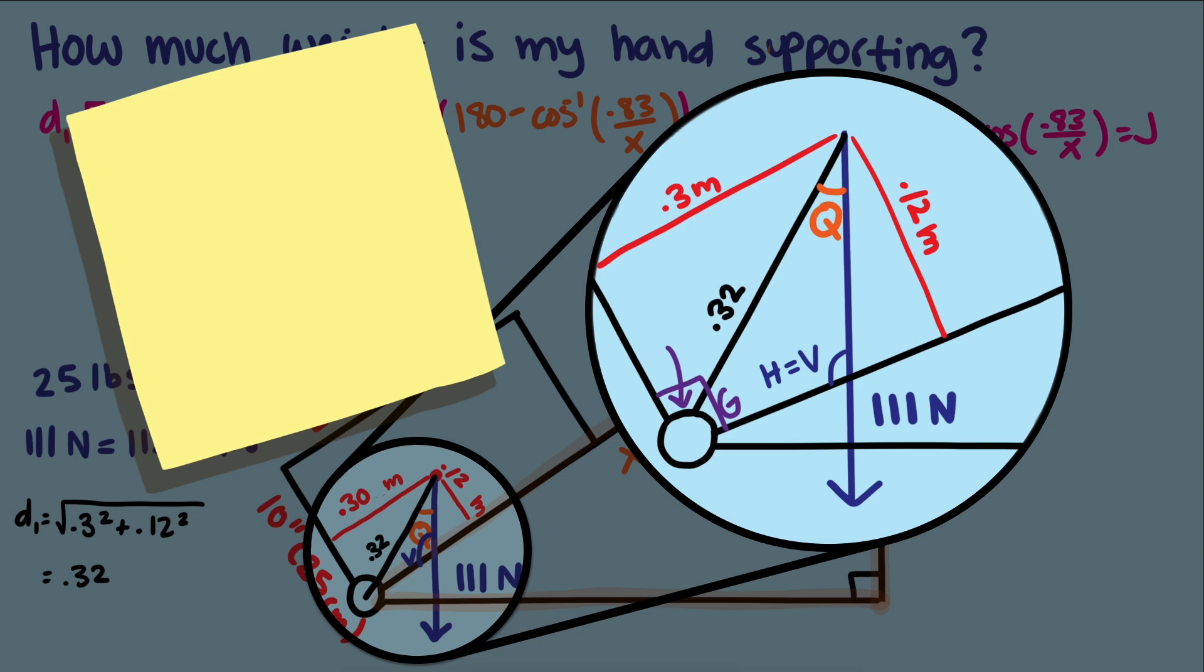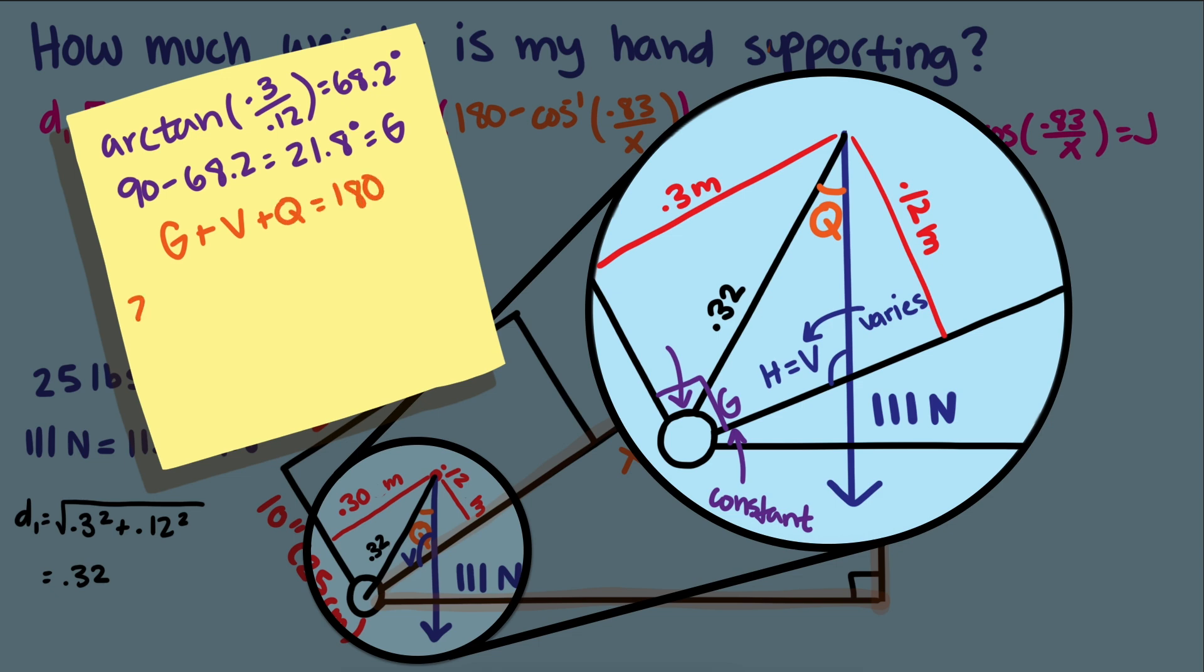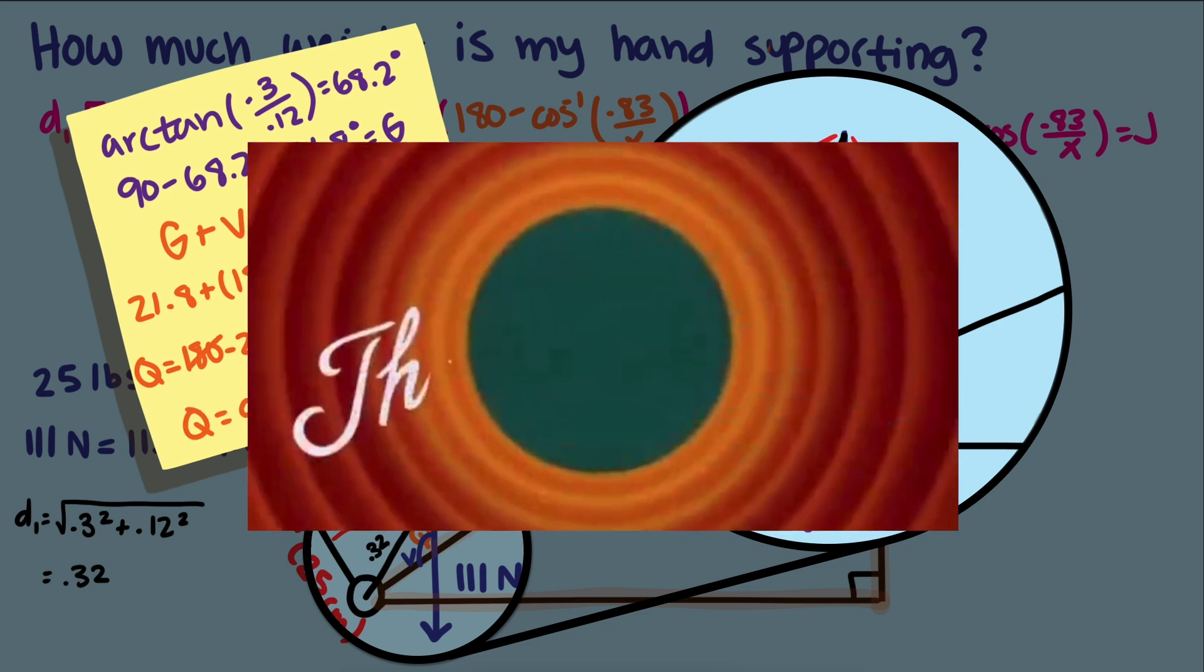We can pull out our handy Sokotoa to find the arc tangent of 0.3 divided by 0.2 which equals 68.2 degrees and then do a little calculation to find that g is 21.8. It's nice because g will never change with the length of that handle. v will change but since it uses h which also uses x it will change with the length of the handle. Now we need to find the angle q. The sum of the angles of a triangle is 180 degrees so g plus v plus q equals 180. Or since we know v and q we can write that equation this way and just solve for q. And there you have it.